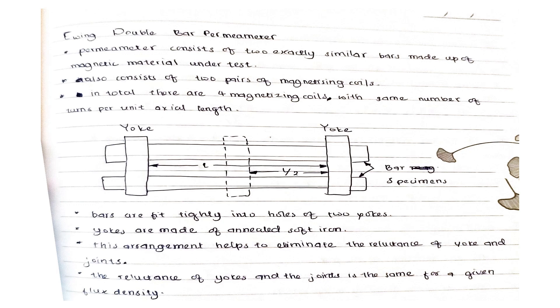Welcome to our channel. Today I will be explaining the Ewing double bar permeameter. It consists of two exactly similar bars made up of magnetic materials under test. There are two pairs of magnetizing coils.